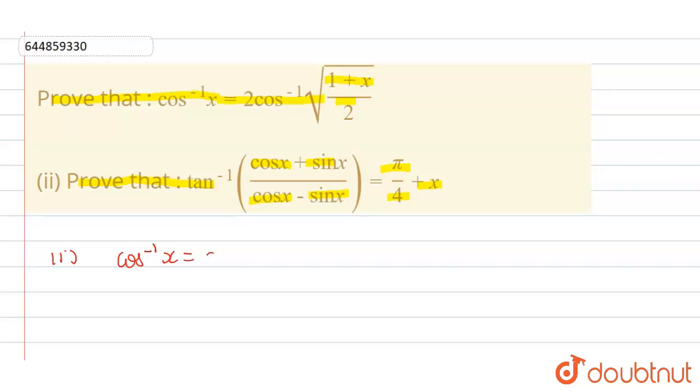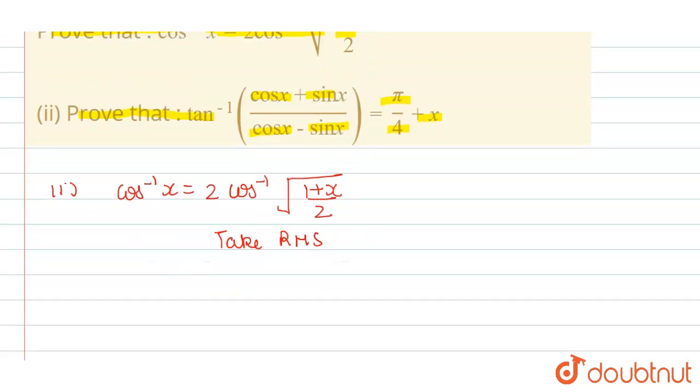Cos inverse of x is equal to 2 cos inverse. We have to prove this equation. So now in this question, we will take RHS. So from here, we get 2 cos inverse under root of 1 plus x by 2.